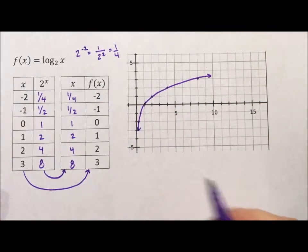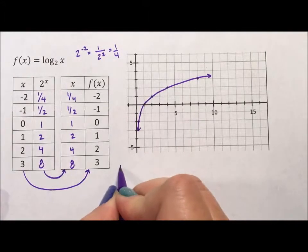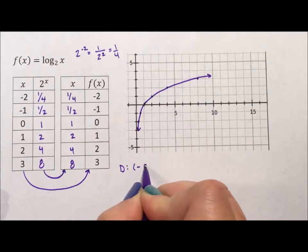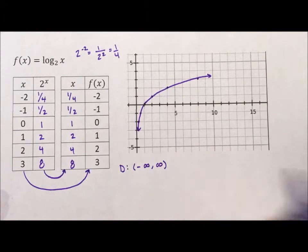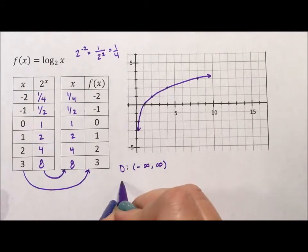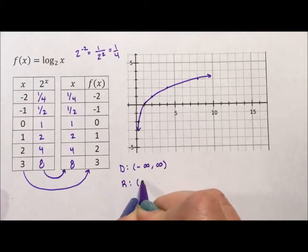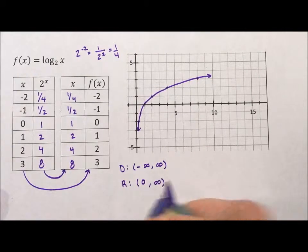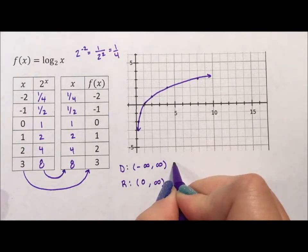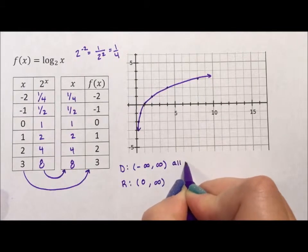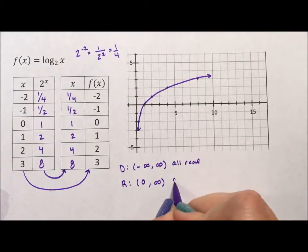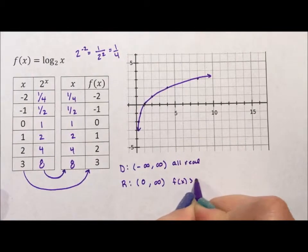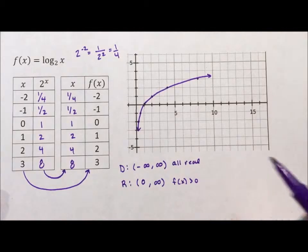I want to add a bonus here. For an exponential the domain of an exponential is all real. I have videos on this, but an exponential you can put in any x. An exponential, the range is 0 to infinity. It has to be above the x-axis. You can write all real here and you can say f of x is greater than 0. That's fine. It means the same thing.